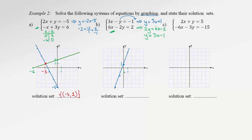Starting from y-intercept negative 1 with slope 3, we draw the green line. As we see, the two lines are actually parallel — they have the same slope so the steepness is exactly the same. Since the lines do not intersect at all, the solution set is an empty set. There is no solution for this system.